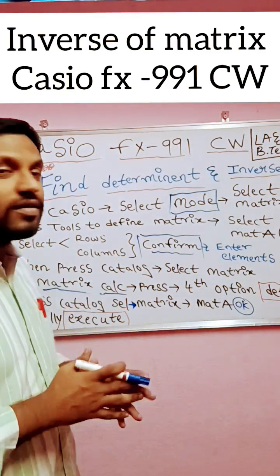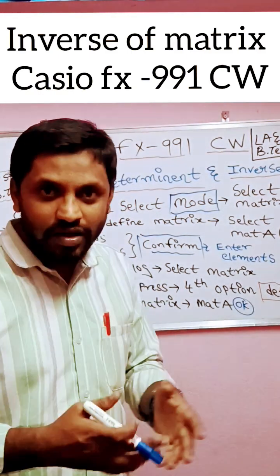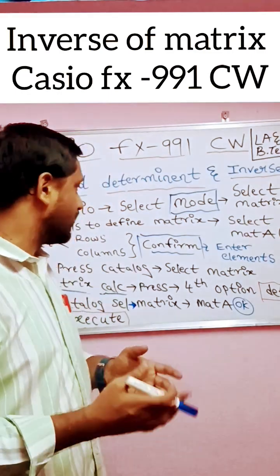Then select number of rows and columns depending on whether it's two rows two columns, three rows three columns, and so on.